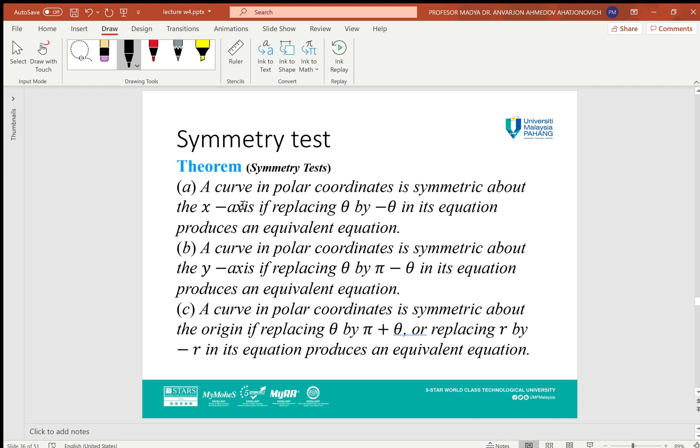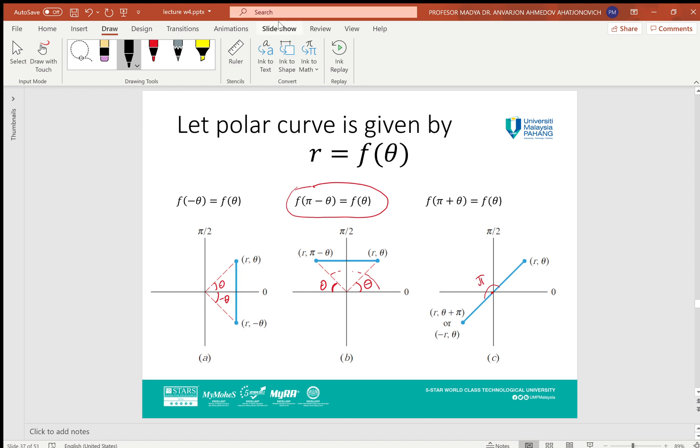These are the symmetric tests. For example, if we are given r equals f(θ), you can see in these pictures the three cases. In the case of symmetricity by polar axis, you can see these two points are located in the symmetric position. If the graph is symmetric in such way for all points, then it will be symmetric by polar axis.